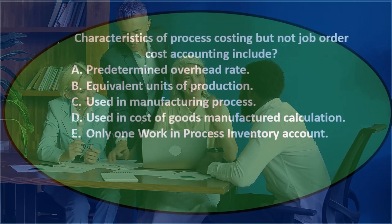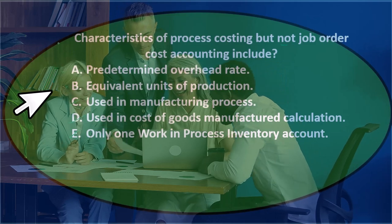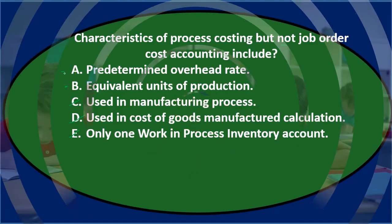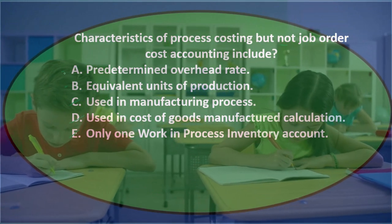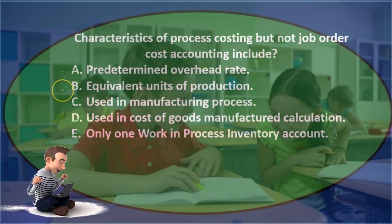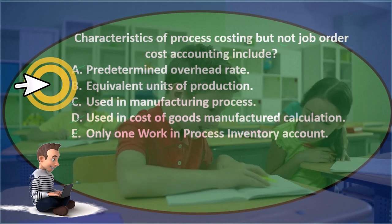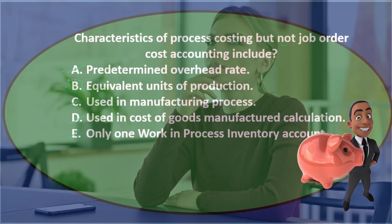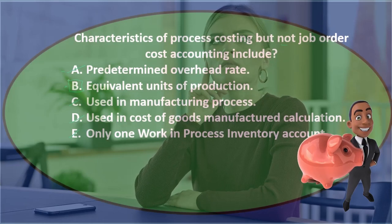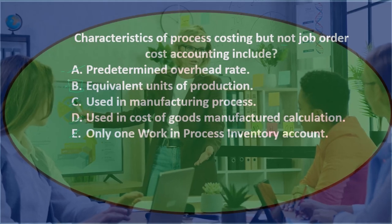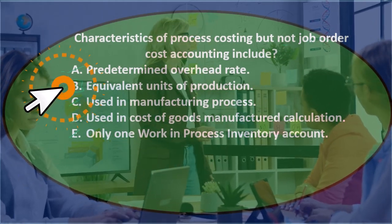We're left with A and B: predetermined overhead rate or equivalent units of production. The predetermined overhead rate is used in both systems to apply overhead, so it's not A. Equivalent units of production are specific to the process cost system — they help us allocate costs between the separate processes. In job cost, we track costs specifically to the job, so we don't need that. Final answer: B, equivalent units of production.